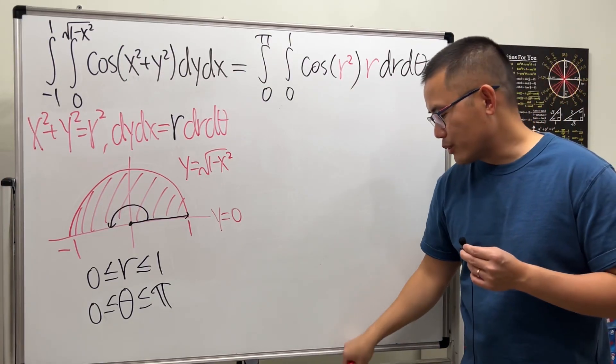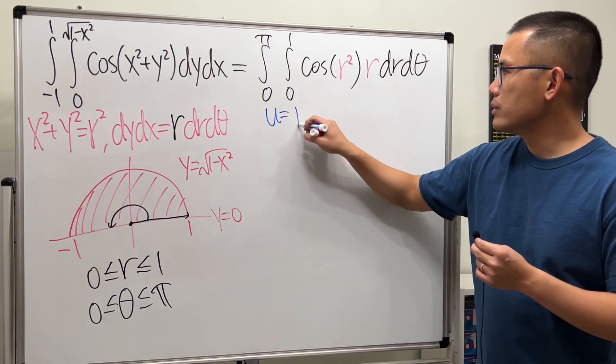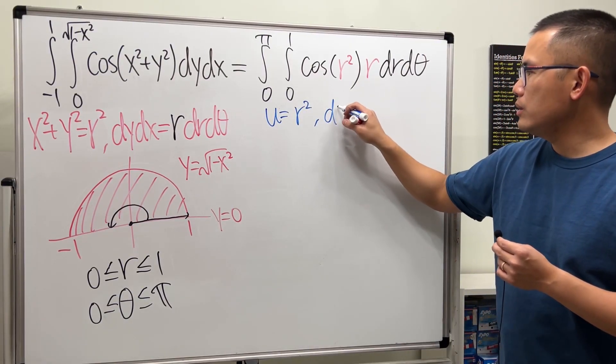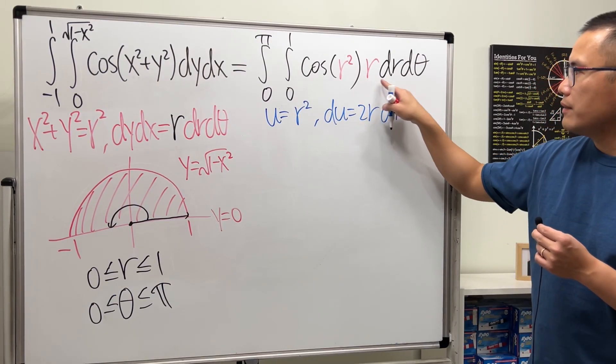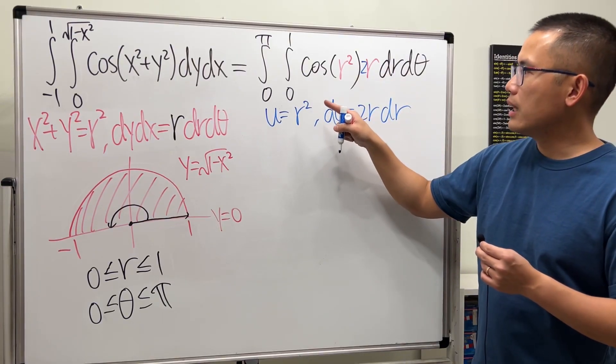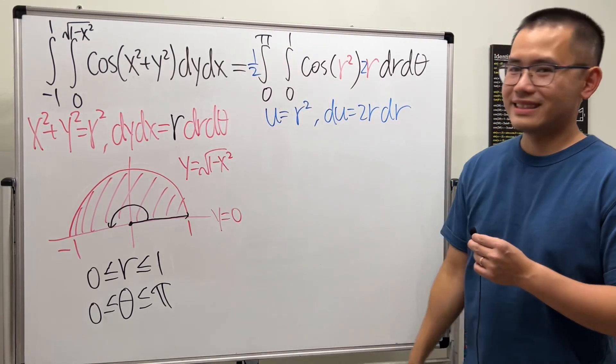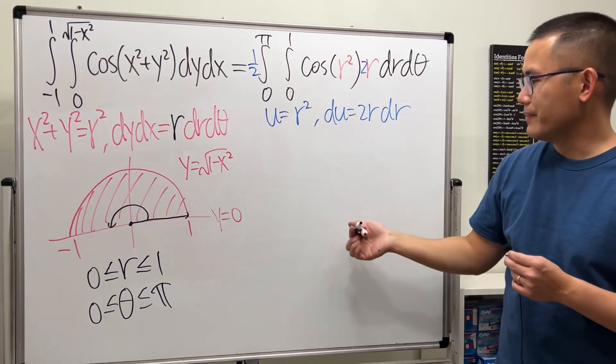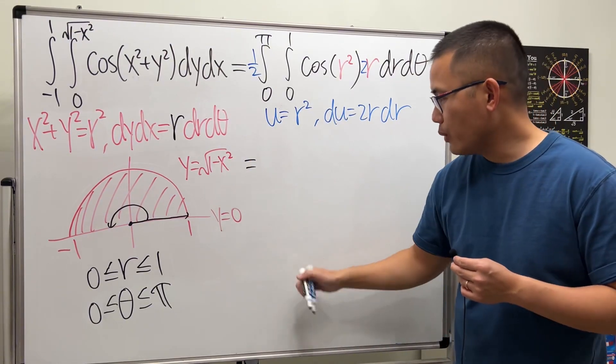Now we can just do this by using a regular u-substitution. So I will put u equal to r squared, and then du is equal to 2r dr. Notice we have r dr already; we need a 2, so let's multiply this by 2, and then I will put down a one-half on the very outside like that so that they cancel out.